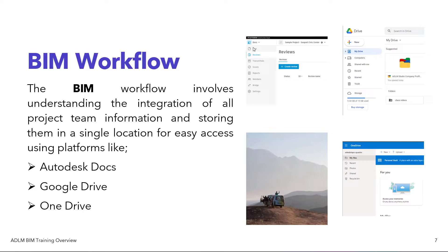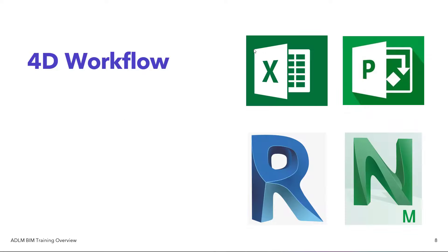If you are on site and the architect is not around, you can easily get to the model and see what that person specified, because the model has been detailed and explained enough. All members of the project team can use this to ensure a reduction in risk and a reduction in cost. All that information is stored in Autodesk Docs. You also have Google Drive, where you can upload your cost model and time model so everyone can access it, and OneDrive performs the same function.